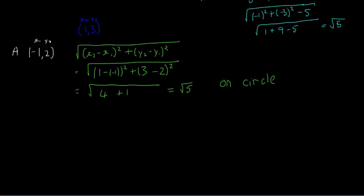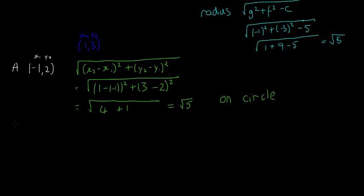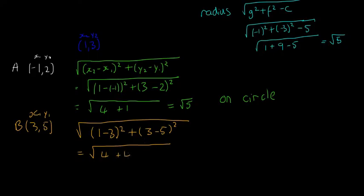For point B = (3, 5), we substitute into the distance formula: square root of (1 − 3) squared plus (3 − 5) squared. That gives the square root of 4 plus 4, equal to √8, which is bigger than the radius √5. So point B is outside the circle.